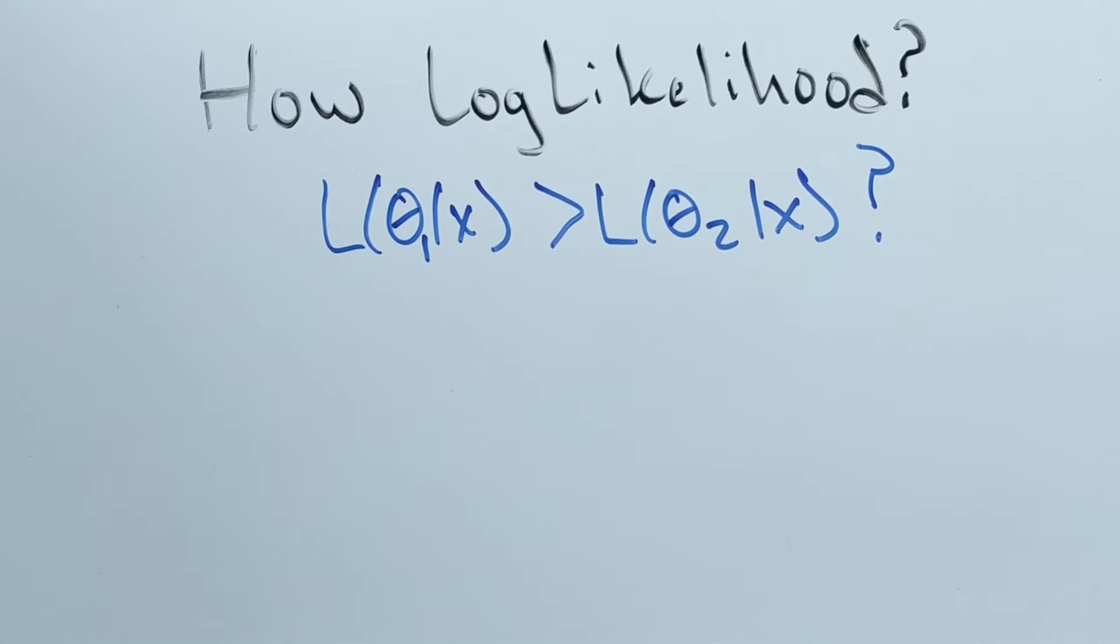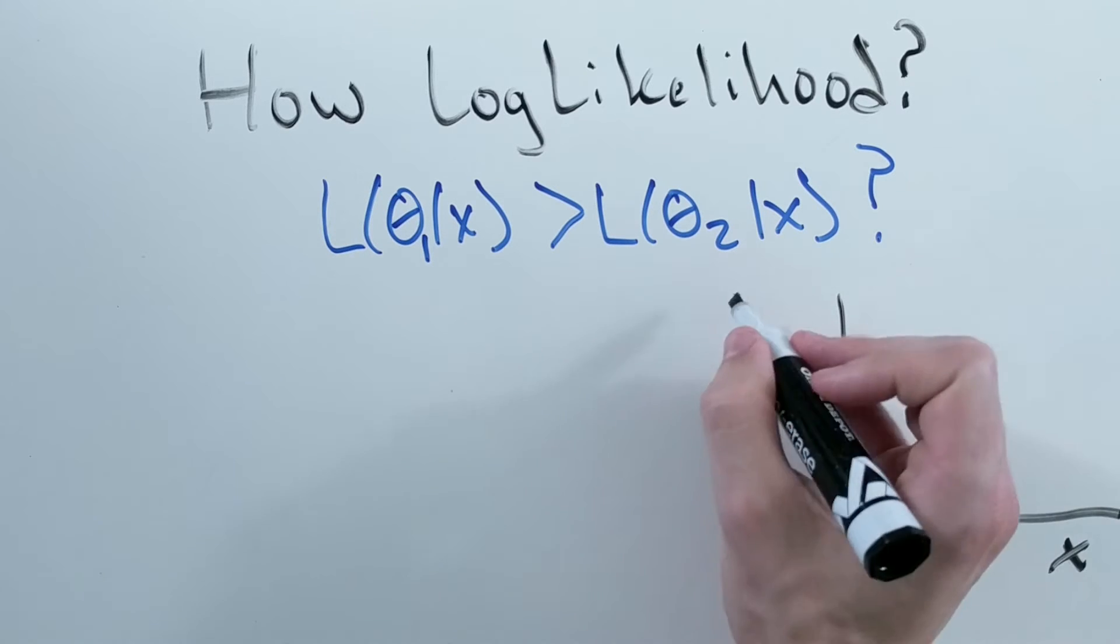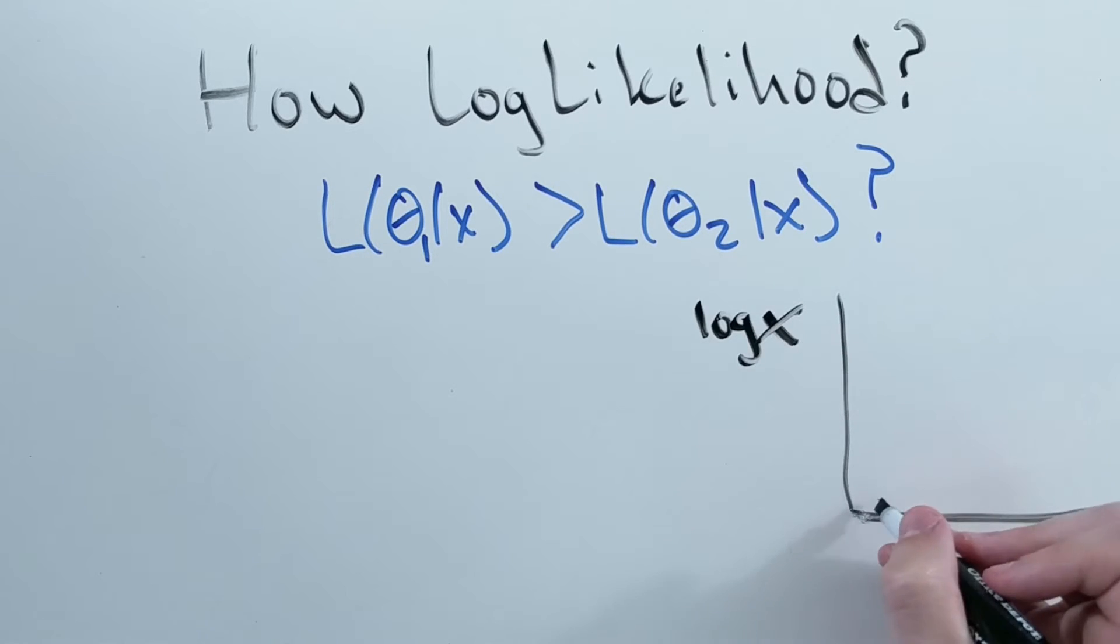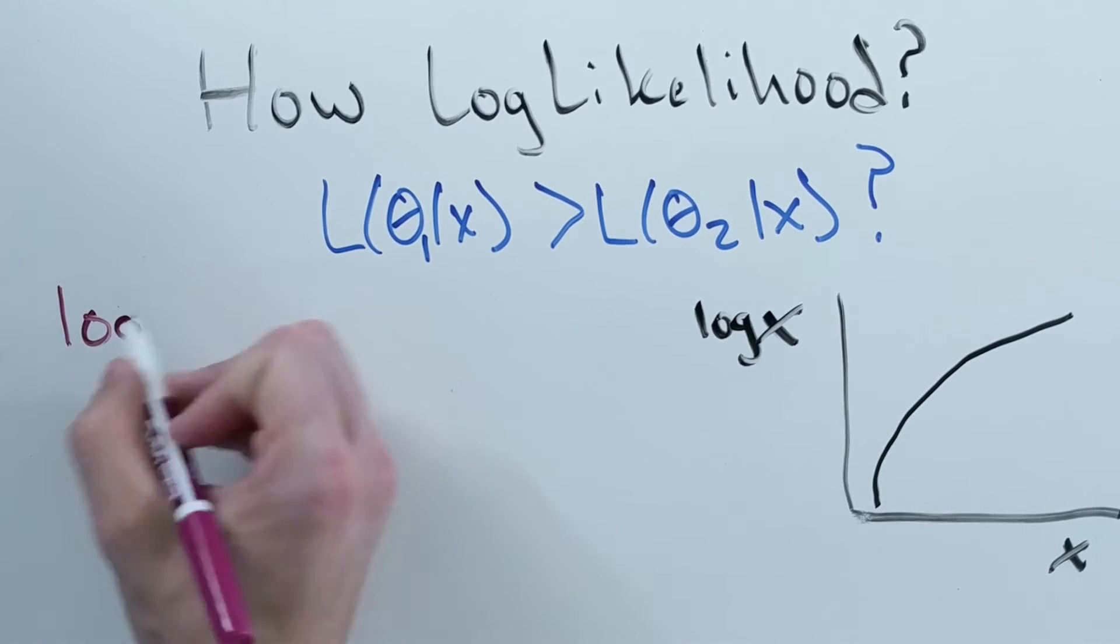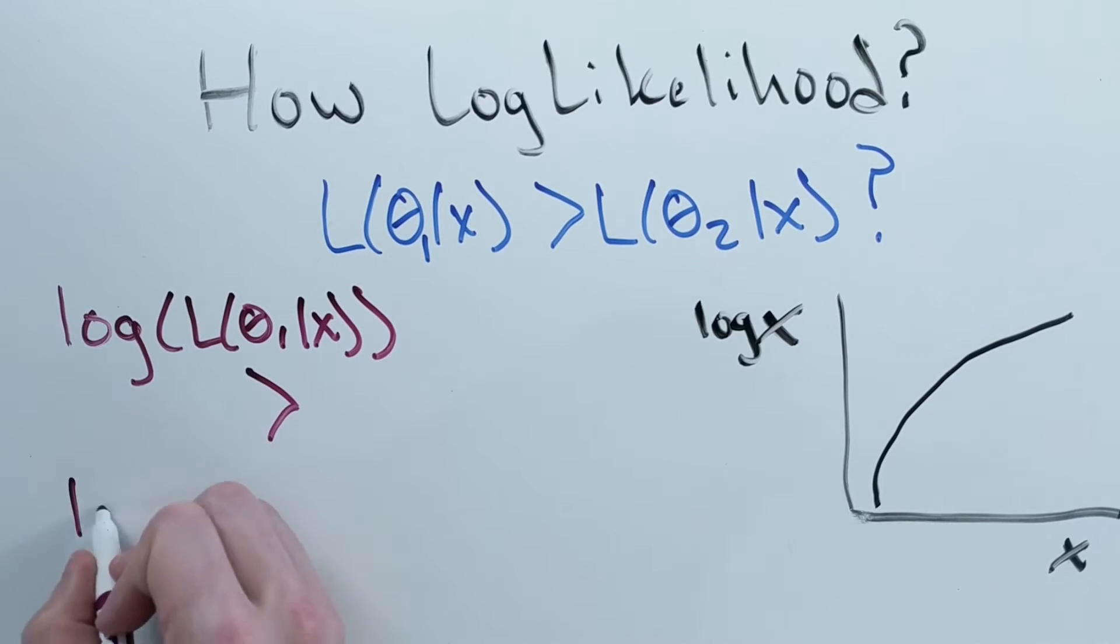So all we really care about is whether the likelihood of one model is greater than the likelihood of the other. By observing that log is a monotonically increasing function, that is, it never decreases, we can notice that if we take the logarithm of both sides, the greater than sign stays the same.